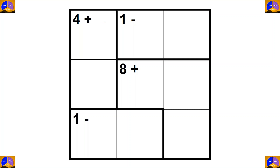First we'll name the cages as A, B, C, etc. So this will be cage A, this will be cage B, this will be cage C, and this will be cage D. Now we'll write the options for each cage.